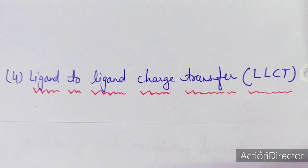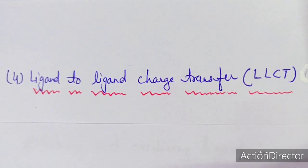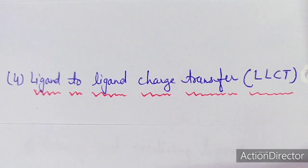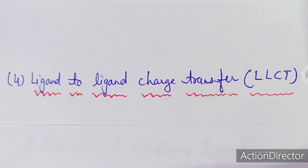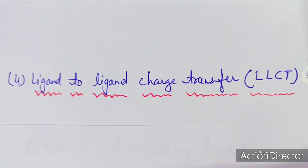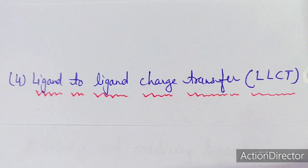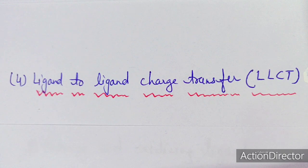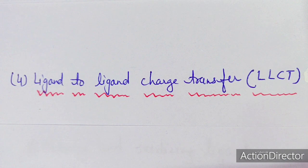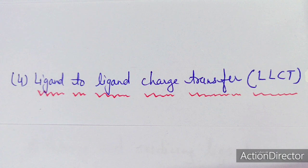Dear students, in this lecture we will discuss the ligand-to-ligand charge transfer transitions related to charge transfer spectra. We have already studied three kinds of charge transfer: LMCT (ligand to metal), MLCT (metal to ligand), and MMCT or IVCT (intervalence charge transfer). Now we will come to the fourth type of charge transfer, that is ligand-to-ligand transfer.